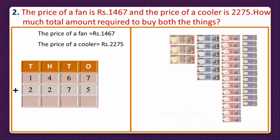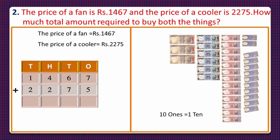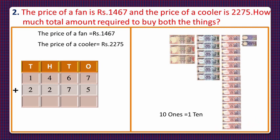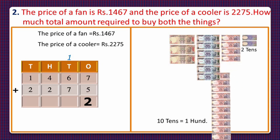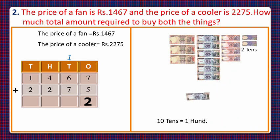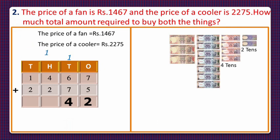Dear students, we have 12 ones. Since 10 ones equals 1 ten, instead of 10 ones we'll take a 10 rupee note. We are left with 2 ones, which we write in the ones column, and carry 1 to the tens column. Now we have 14 tens. Since 10 tens equals 100, instead of 10 tens we'll take a 100 rupee note. We are left with 4 tens, written in the tens column, and carry 1 to the hundreds column.